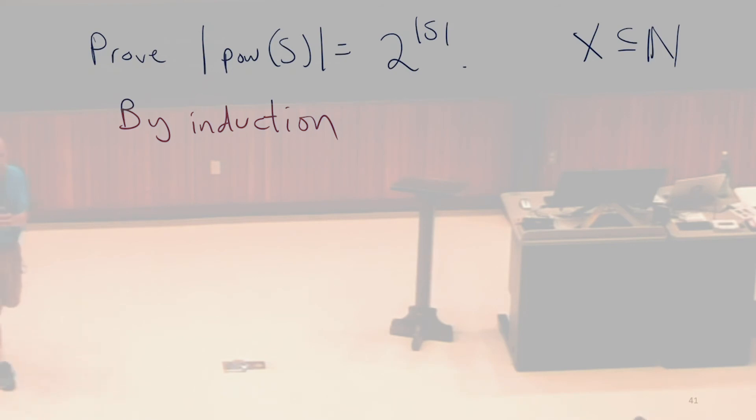But we're not trying to prove something about the natural numbers, at least we haven't stated it as a property of the natural numbers, we've stated it as a property of all sets. So what do we need to do to make this work?